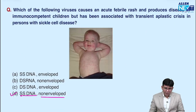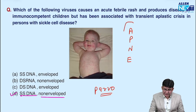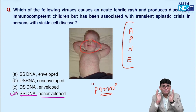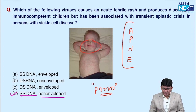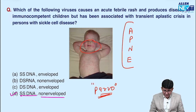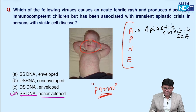Now, which other diseases are caused by Parvovirus besides the slapped cheek appearance of Erythema infectiosum? This is asked again and again. Remember the mnemonic APNE for the diseases caused by Parvovirus B19. Imagine the child receiving slaps on both cheeks — after the slap, what happens? Use APNE: A is for Aplastic crisis, specifically in sickle cell anemic patients.